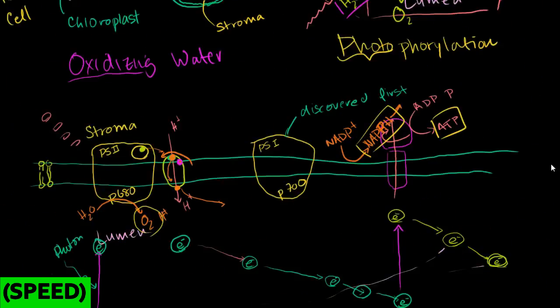So let's understand what's going on here a little bit better. So we had our light reactions, and they produced ATP and produced some NADPH.